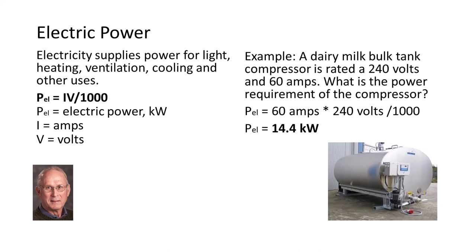Electricity supplies power for light, heating, cooling, ventilation, and other uses. For example, we can calculate the power requirement of a milk bulk tank compressor rated at 240 volts and 60 amps as 60 amps times 240 volts, which equals 14.4 kW or 19 horsepower.